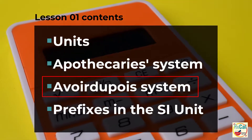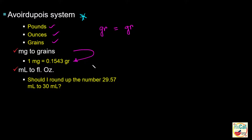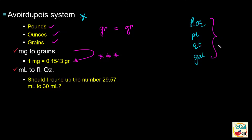Now, the avoirdupois system. The avoirdupois system uses pound, ounce, and grains. The grain used in the avoirdupois system is the same as the grain used in the apothecary system. In this system, 16 grains make one ounce, and 16 ounces make one pound. You should be able to convert milligrams to grains, and milliliters to fluid ounces. If you see a grain unit in a question, first convert it to milligrams. Likewise, if you see fluid ounce, pint, quart, or gallon, convert to milliliters to perform the calculation.